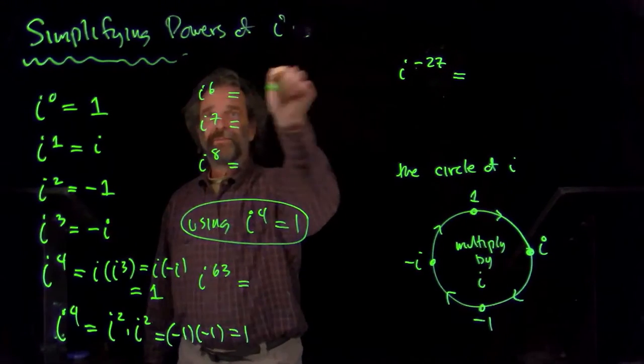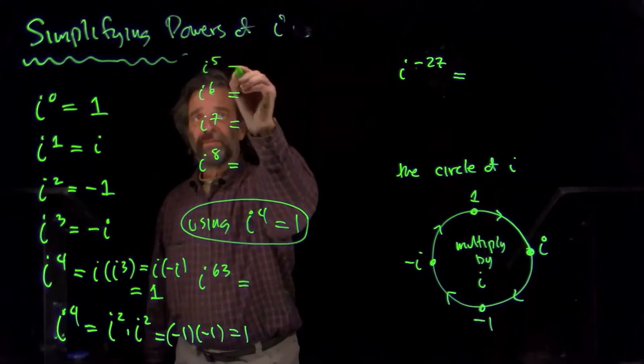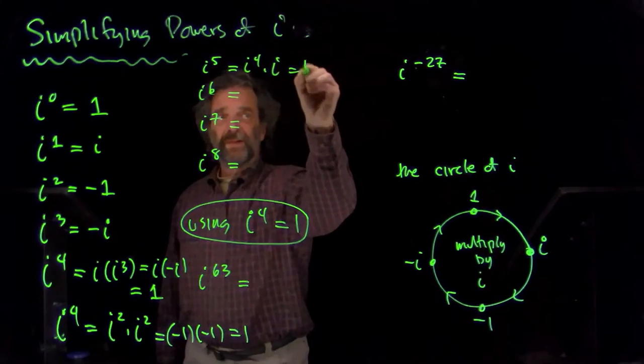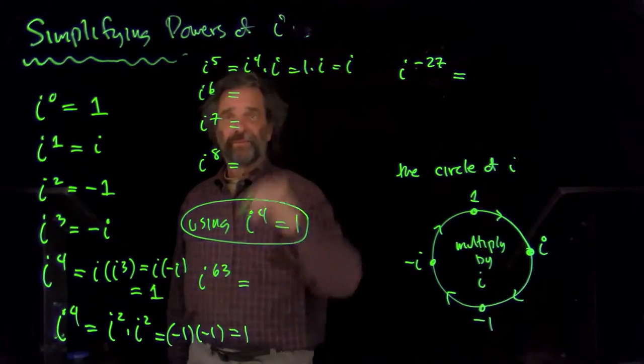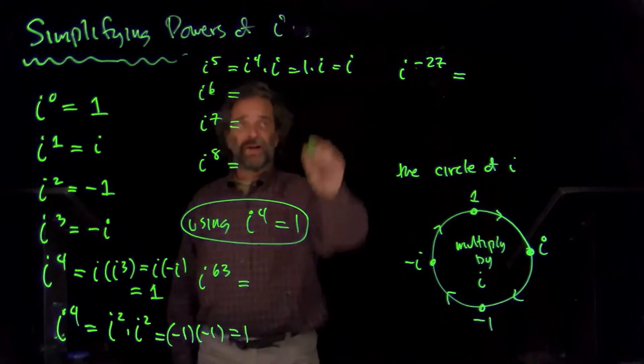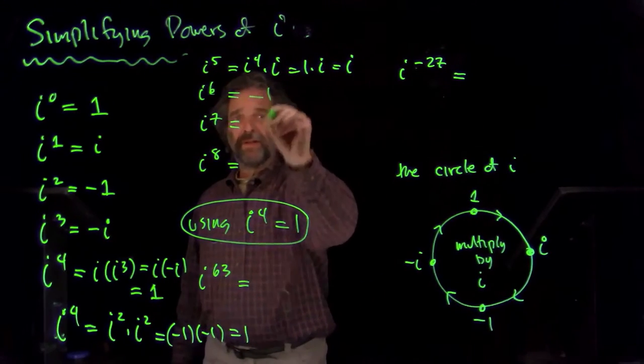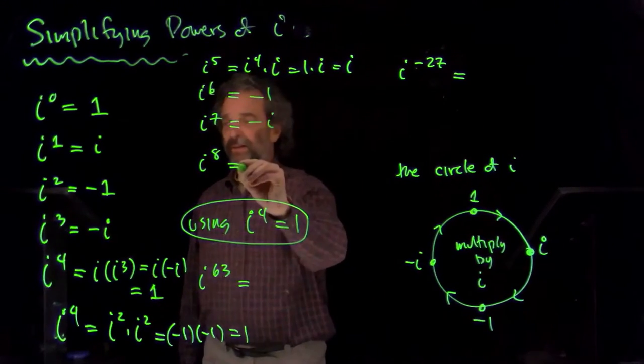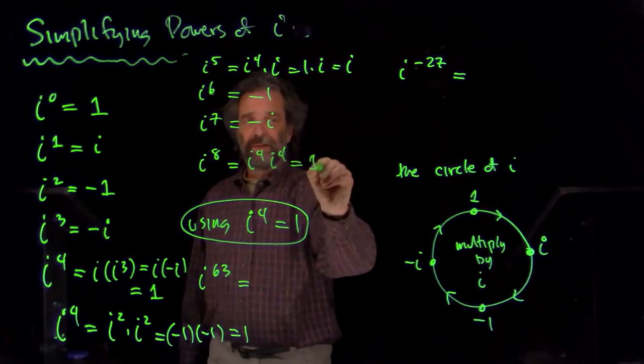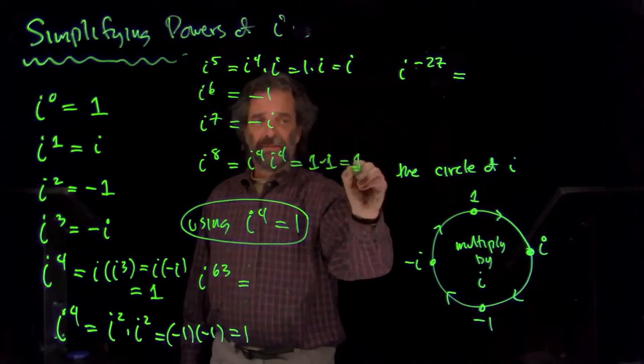i to the fifth, then, is i to the fourth times i, which is one times i, which is i. And i to the sixth is another i, so i times i is minus one, and then again minus i. i to the eighth is i to the fourth times i to the fourth. That's one times one. That's one.